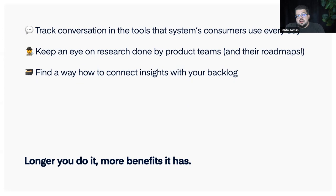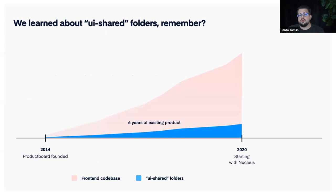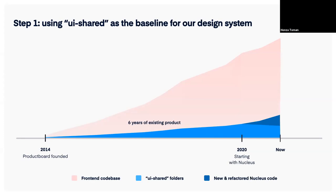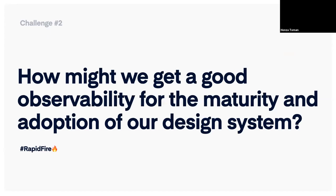I got kind of addicted to the continuous discovery process and couldn't work without it anymore. There's one more thing I mentioned at the start: we learned about shared UI folders in our codebase. When starting Nucleus, we decided to move all these components from shared UI folders and use them as a baseline for our design system — which introduced some UI debt from the start. So we started doing continuous work on improving the quality of components to match what we consider high quality.